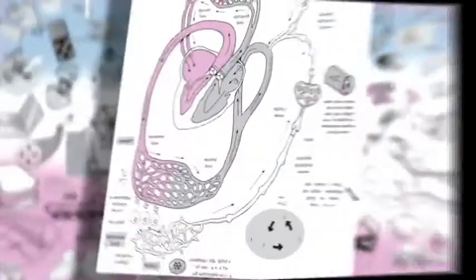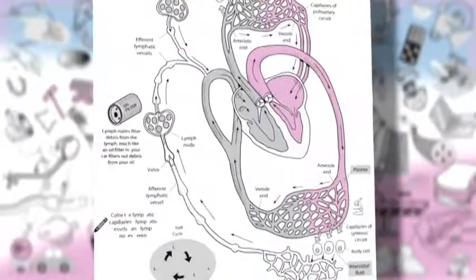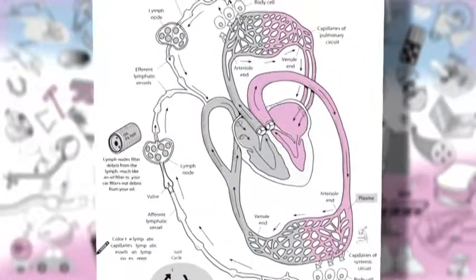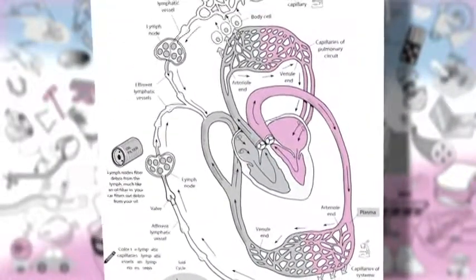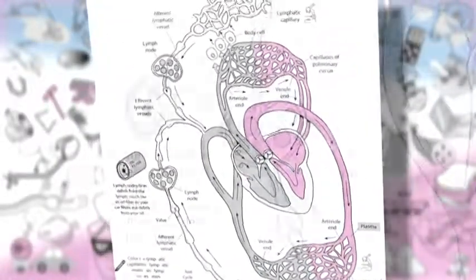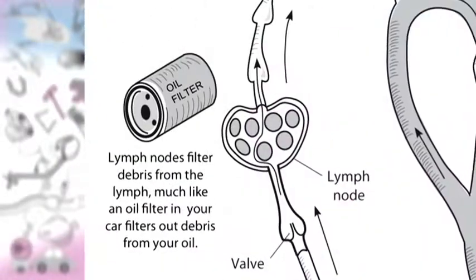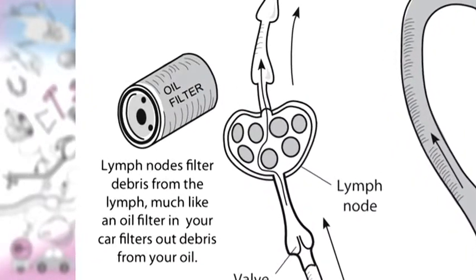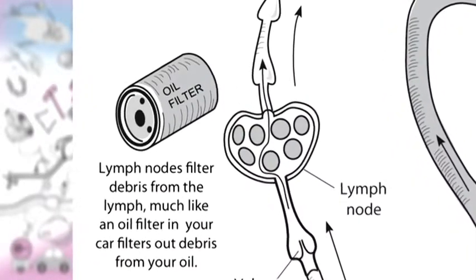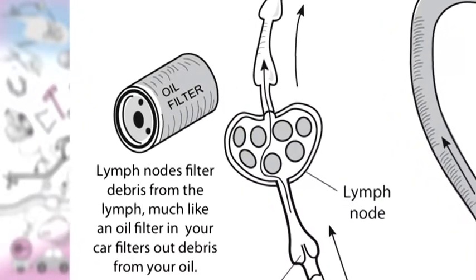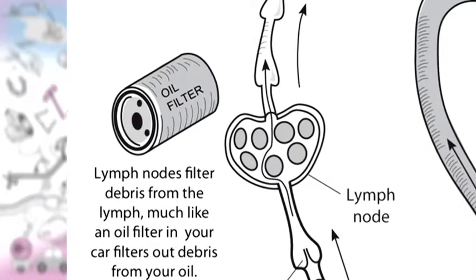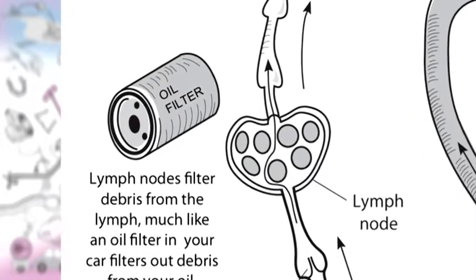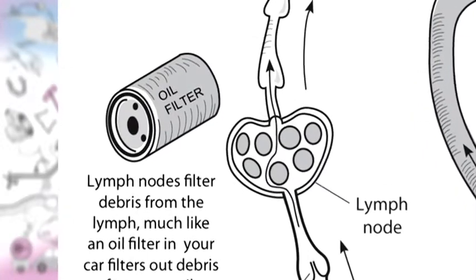Another example is found inside the lymphatic system — there are many lymph nodes. We compare the lymph node to an oil filter. Just as an oil filter filters out debris from the oil in your car, a lymph node can filter out debris from the fluid referred to as lymph.